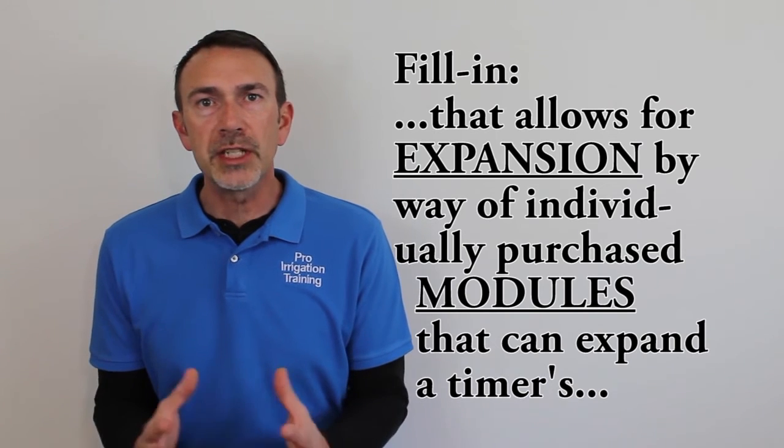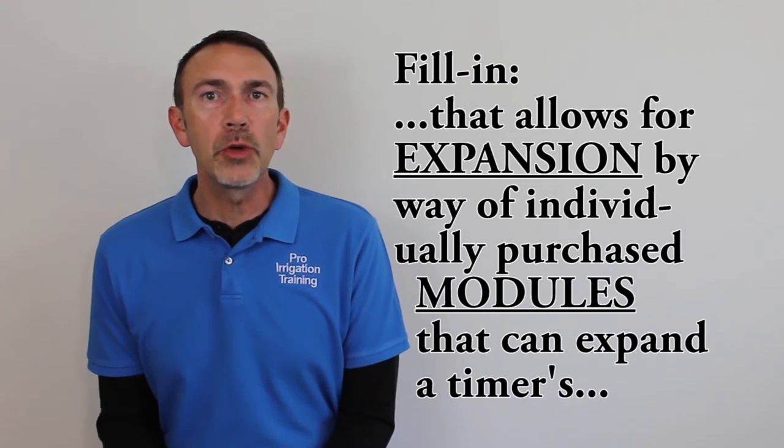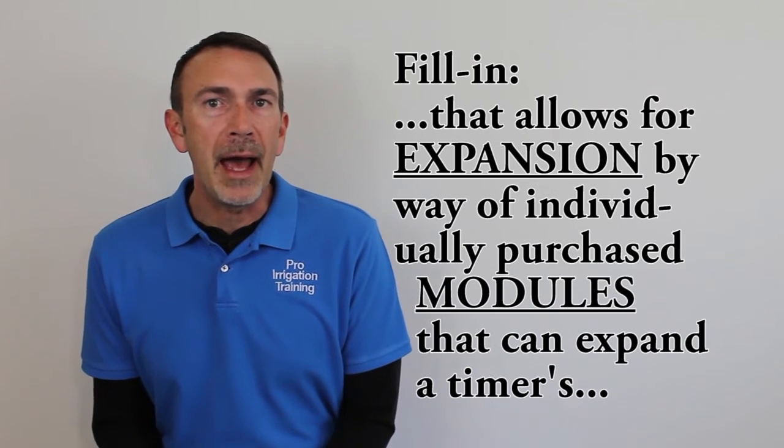Most manufacturers offer a modular version of their timers which allows for expansion of the number of zones by way of individually purchased modules that fit into the back of the timer. Usually these models come with one module in it and that'll have three or four zone terminals, a master valve and pump terminal, and also a terminal for your common wires. Usually these will expand by way of these individual modules up to 12, maybe 15 zones. Some of the larger timers have modules of 10 or 15 that can plug in for some of the larger properties or commercial properties that you might be dealing with.